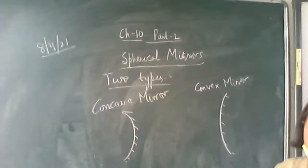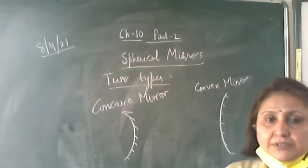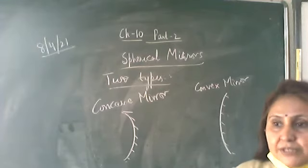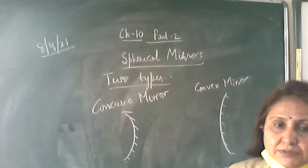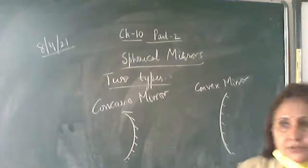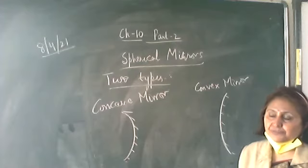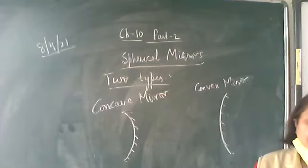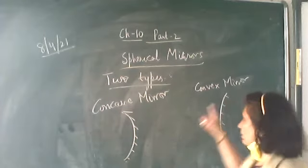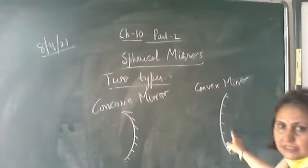You have to place the object in front of the reflecting surface. Now, like a question: Name the two types of spherical mirrors and draw their figures. The two types of spherical mirrors are concave and convex mirror. Concave mirror — inner surface reflecting. Convex mirror — outer surface reflecting. And these are the figures for the concave mirror and the convex mirror.